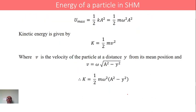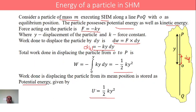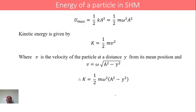The potential energy at any displacement y is given by U equals half k y squared. For maximum potential energy, the maximum displacement equals a, the amplitude. Therefore, U_max equals half k y_max squared, and substituting y_max equals a, we get U_max equals half k a squared.